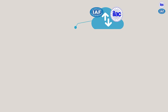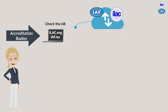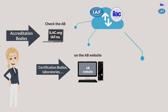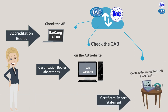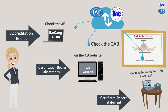Secondly, you can confirm the validity of the certificate directly with the conformity assessment body. To do that, you go first to the ILAC and IAF website where you can search for the accreditation body mentioned in the document. You will find the link to the accreditation body website where you can check the information about the conformity assessment body, its scope, its accreditation validity, its website and contact information. Then you can directly check on its website or get in touch with the conformity assessment body to validate the certificate.